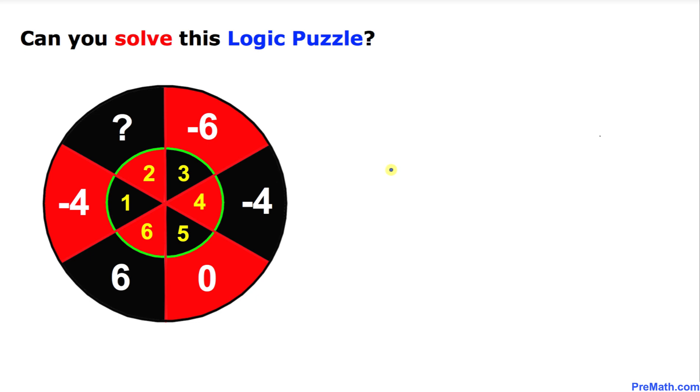Welcome to pre-math. In this video tutorial we are going to solve this given dartboard logic puzzle. As you can see in this puzzle, three corresponds to -6, four corresponds to -4, five corresponds to 0, six corresponds to 6, one corresponds to -4. Now the question mark - what number is going to correspond to this two?